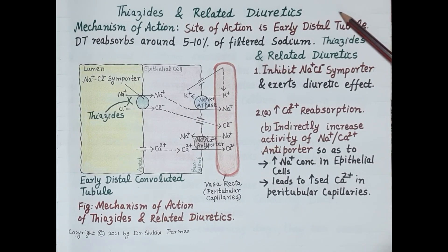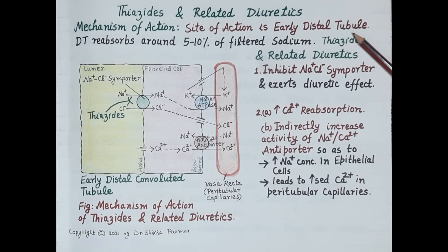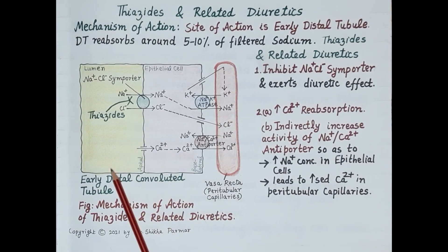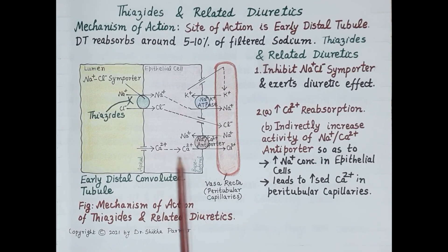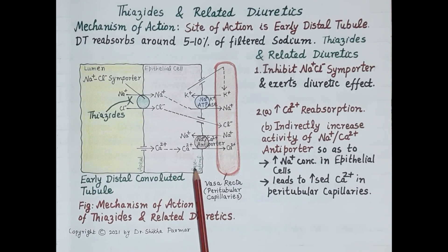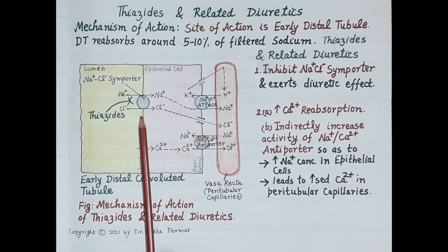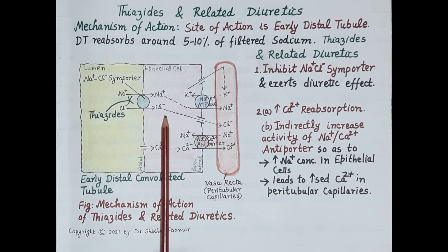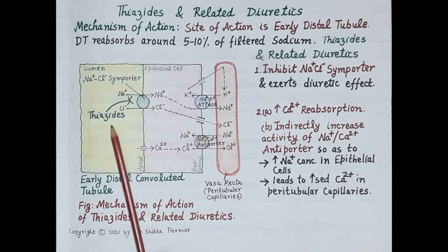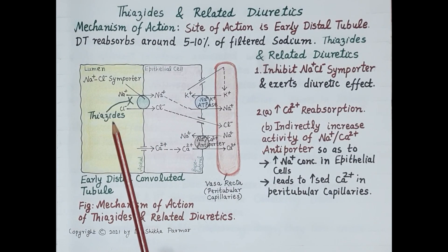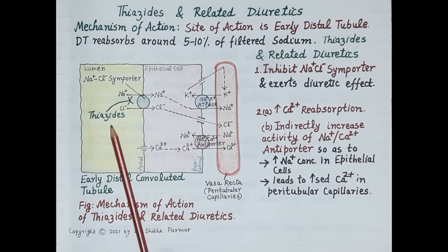The site of action is the early distal convoluted tubule, where around 5 to 10 percent of sodium from the filtrate is reabsorbed. This diagram shows the lumen containing the filtrate, the luminal epithelial cell of the early distal convoluted tubule with its apical surface towards the lumen and basolateral surface close to the peritubular capillaries. Thiazides inhibit the sodium-chloride symport, inhibiting reabsorption of sodium into the epithelial cells, causing a fall in sodium in the peritubular capillaries and exerting a diuretic effect.